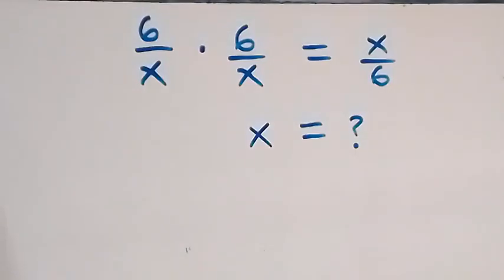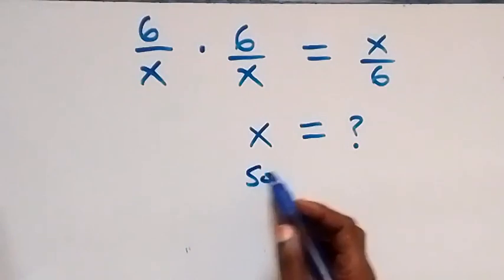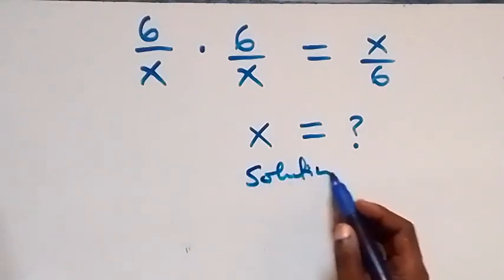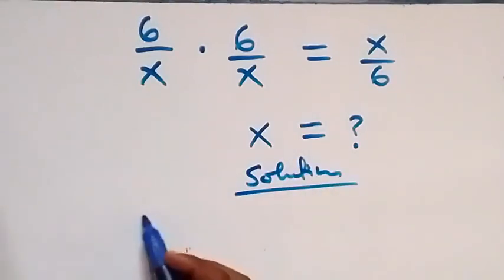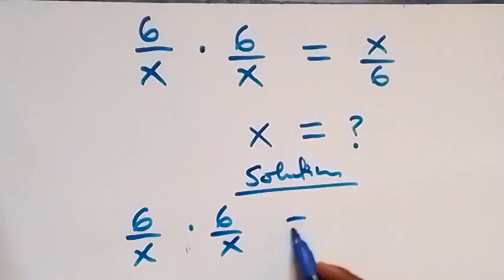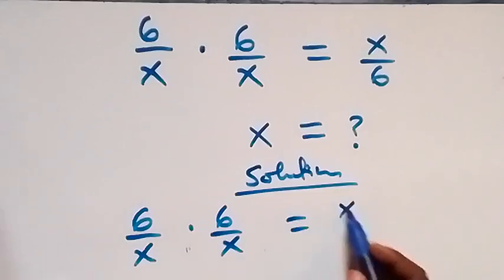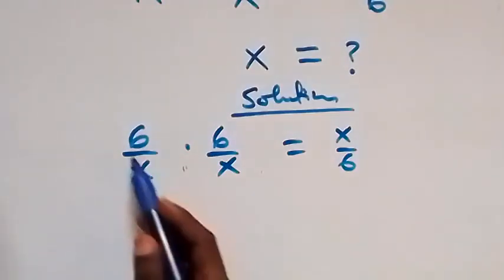Hello, you're welcome. Here's how to solve this nice algebra problem. From what is given: (6/x) times (6/x) equals x/6. Here we have 6 over x times 6 over x.